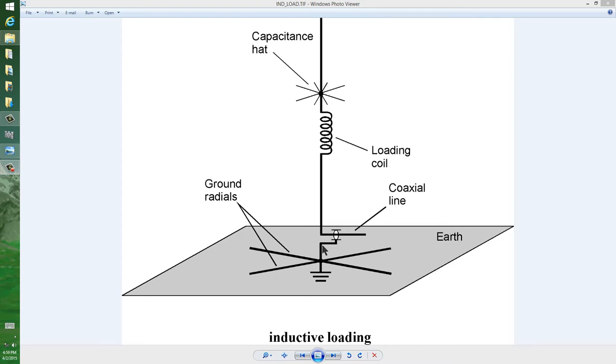You can make this antenna shorter than it would be if it were a full quarter wavelength electrically by inserting a loading coil in series with the element. Usually, the best place for that is roughly at the center of the radiating element.